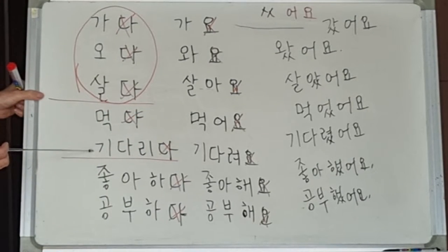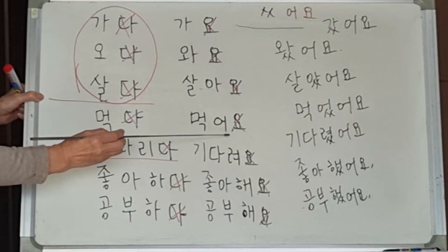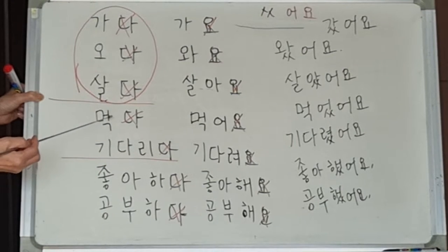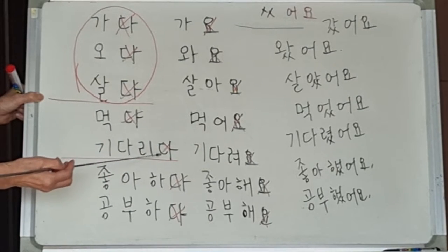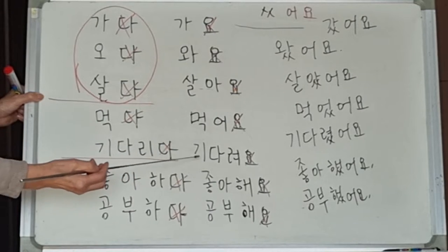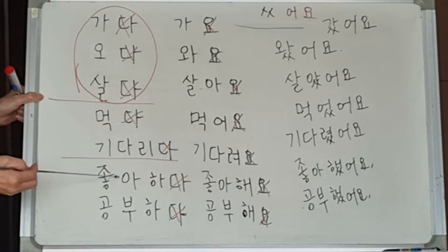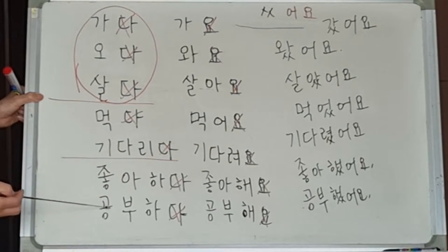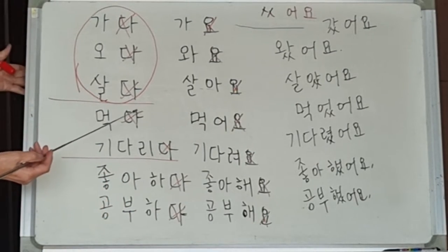살다 takes 아요, giving 살아요. These verbs — and there are many — that end with a dark vowel take 어요. So 먹다 becomes 먹어요, and 기다리다 becomes 기다려요, because 이 plus 어 contracts. And all verbs ending in 하다 become 해요: 좋아하다 → 좋아해요, 공부하다 → 공부해요, 파티하다 → 파티해요, tennis 하다 → tennis 해요.